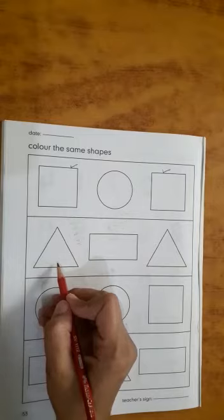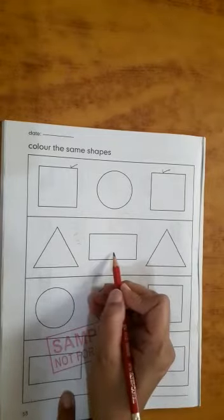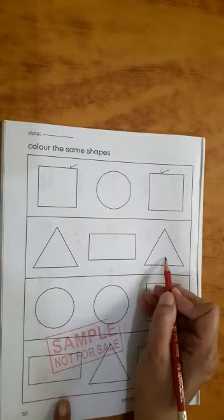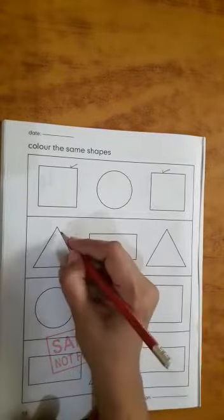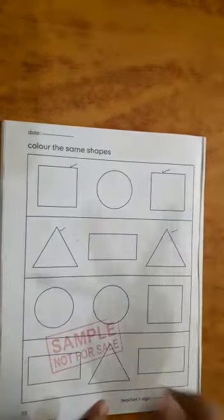Which shape is this? Triangle. This? Rectangle. This? Again triangle. So you have to colour the triangle. These two are same. Next.